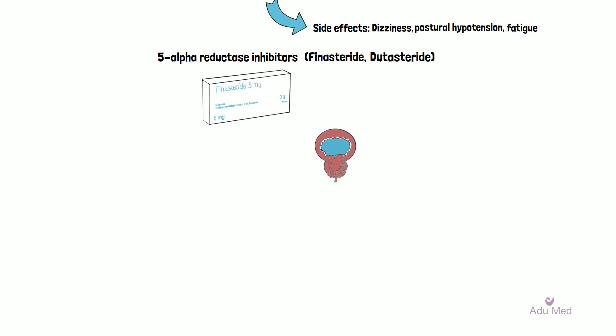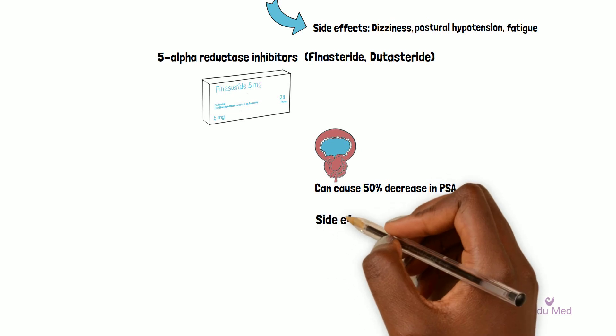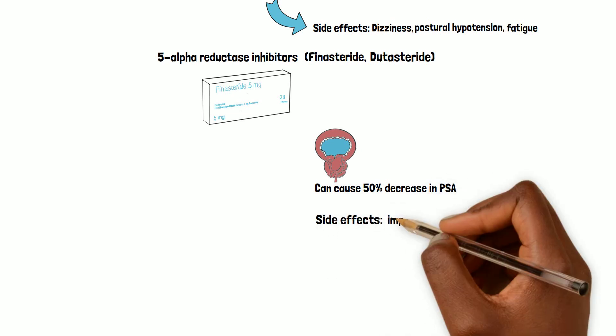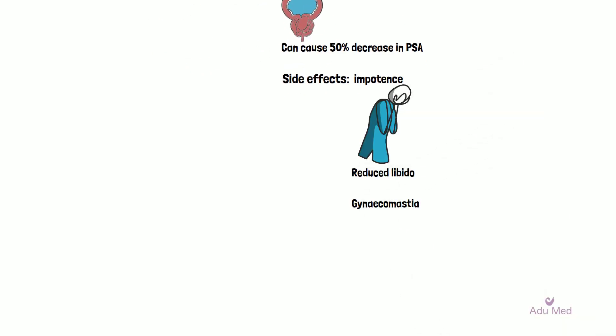5-alpha reductase inhibitors can cause up to a 50% decrease in PSA levels, which will return to baseline 6 months after stopping this medication. It is therefore important to take this into consideration when reviewing the PSA blood results of patients on finasteride. Due to their mechanism of action and involvement in testosterone metabolism, common side effects include impotence, reduced libido, gynaecomastia and ejaculatory dysfunction.